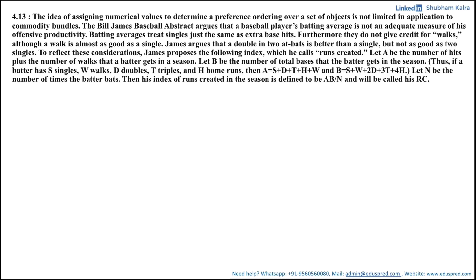In this video we will be solving a question about assigning numerical values to determine a preference ordering over a set of objects. The Bill James Baseball Abstract argues that a baseball player's batting average is not an adequate measure of offensive productivity, as batting averages treat singles the same as extra base hits and do not give credit for walks. James argues that a double in two at-bats is better than a single but not as good as two singles, and proposes the following index which he calls Runs Created.